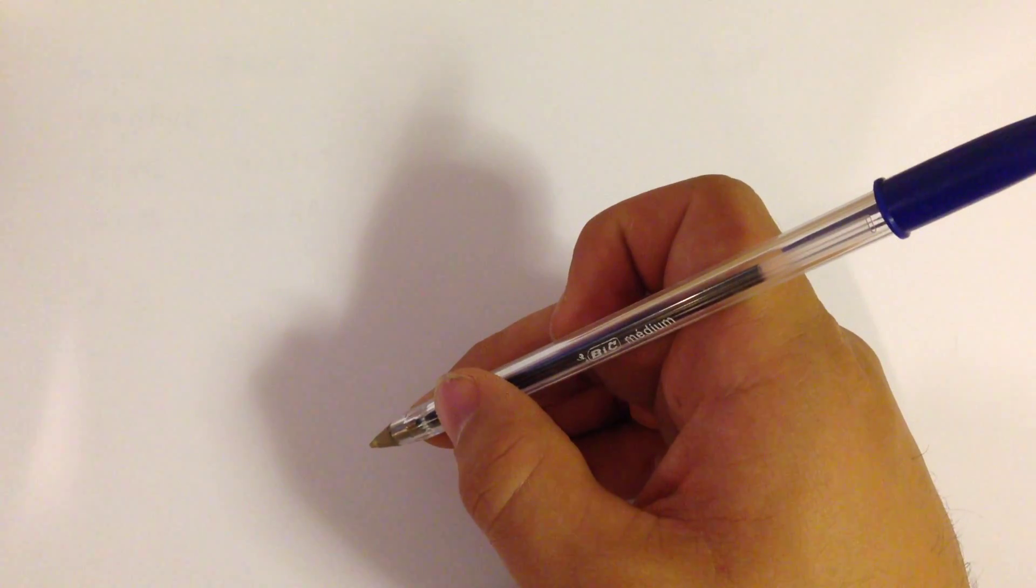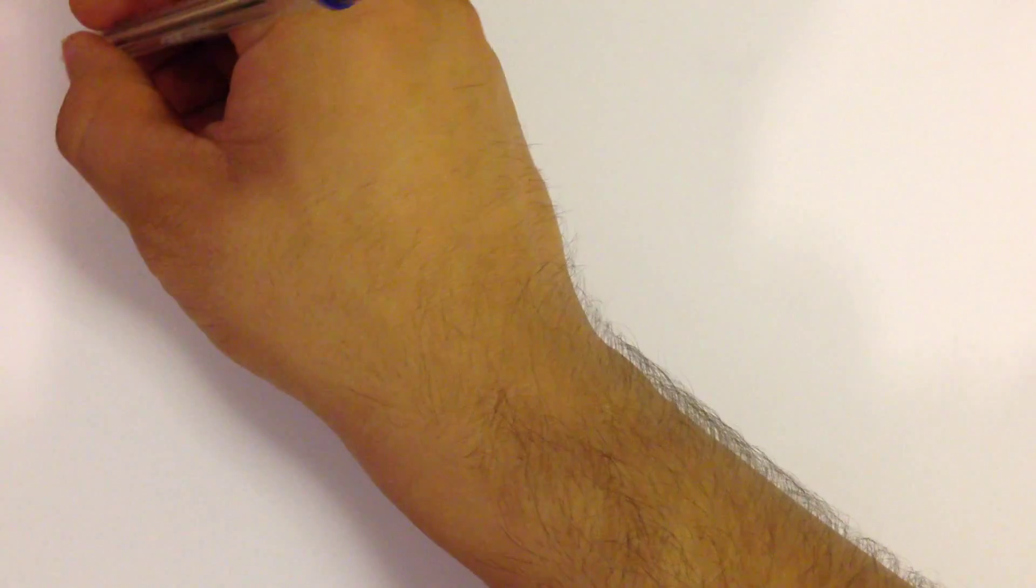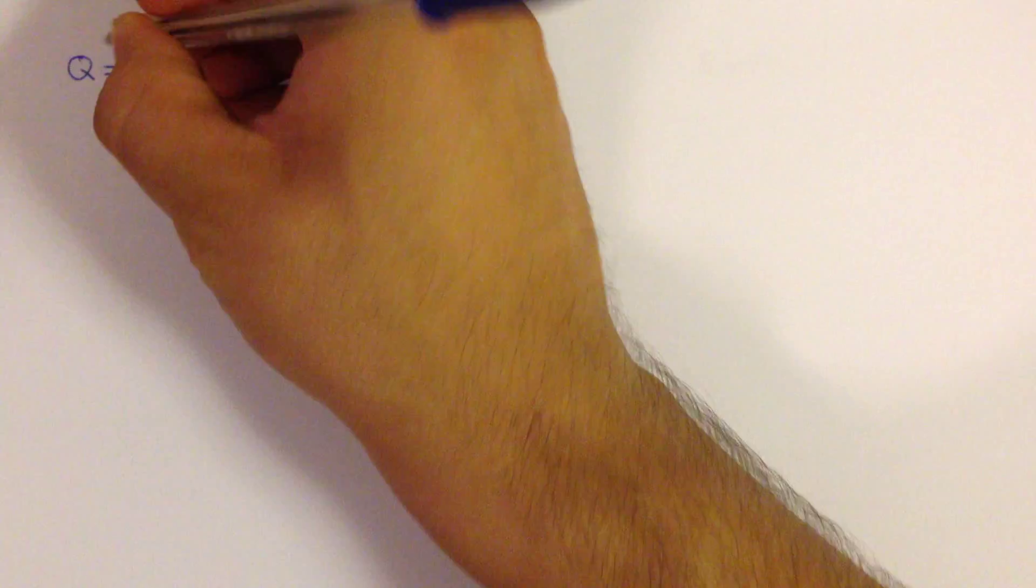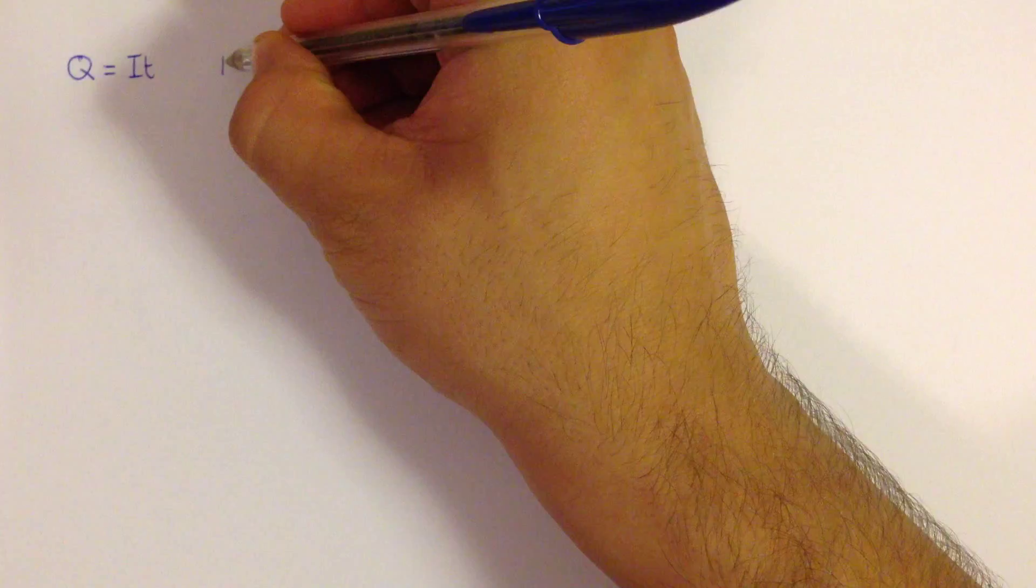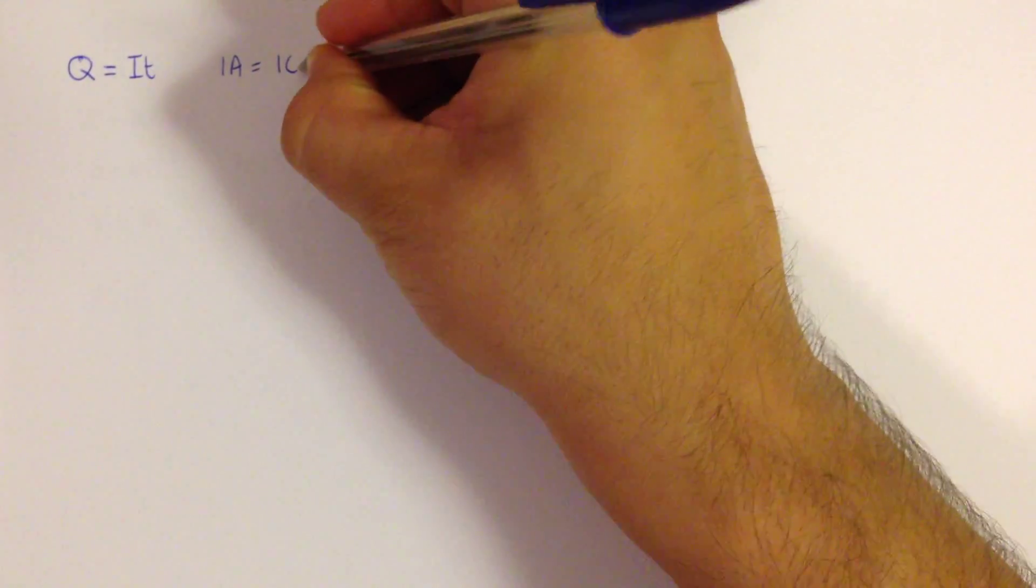This video is to cover all of the equations in the second AS physics exam, electrons, waves and photons. So the first equation you learn in module 1 is charge is equal to current multiplied by time, which we remember as the quit equation. This also gives us a definition of 1 ampere, which is that 1 ampere is equal to 1 coulomb per second.